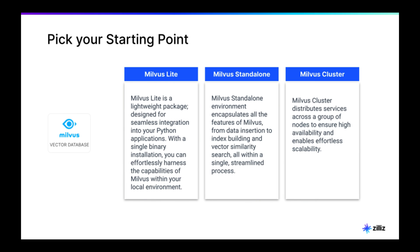There are three versions of Milvus to get you started. Milvus Lite is a lightweight package designed for seamless integration into your Python application. With a single binary installation, you can easily harness the capabilities of Milvus within your local environment. Milvus Standalone encapsulates all the features of Milvus in a standalone database — from data insertion to index building and vector similarity search — all within a single streamlined process, perfect for your AI application in production.